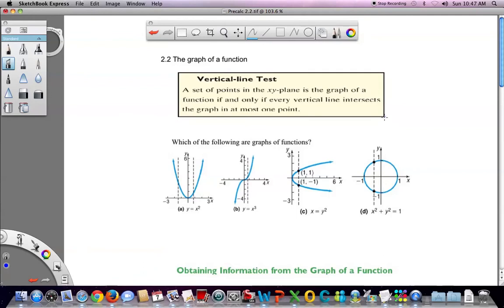We'll start with the vertical line test. The vertical line test can be used to see if you have a function or not. A set of points in the xy plane is the graph of a function if and only if every vertical line intersects the graph in at most one point. So here we have two vertical lines that are drawn and you see that this vertical line intersects only at one point.